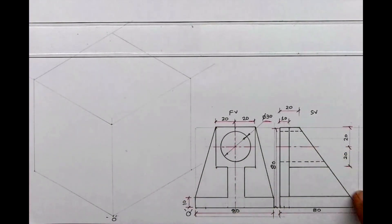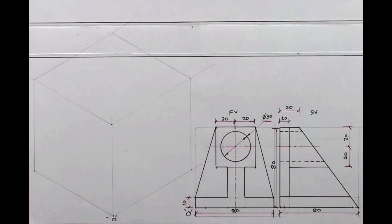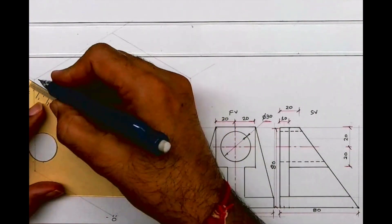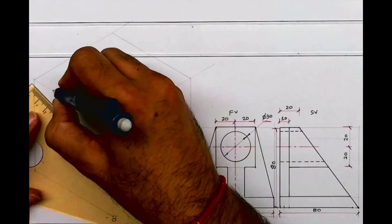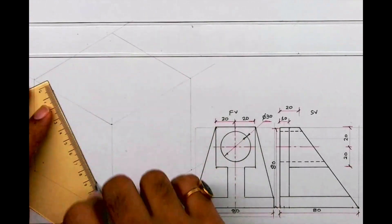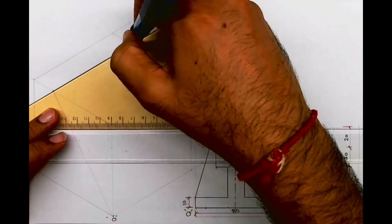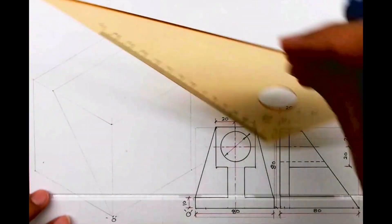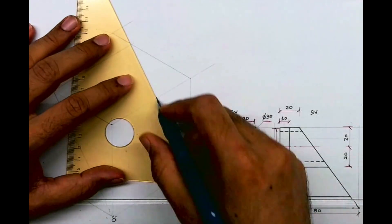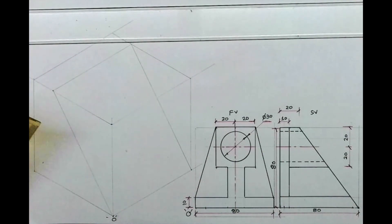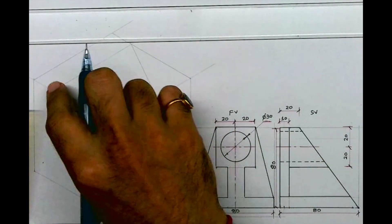If you see, this entire part is a slope, so we'll draw that first. For that, we'll take 20 from here and draw that slope first. Whatever is on the left side, the same thing is on the right side, so with that concept we can complete this part. Always remember in isometric — always draw the slope first. So we are done with this slope.